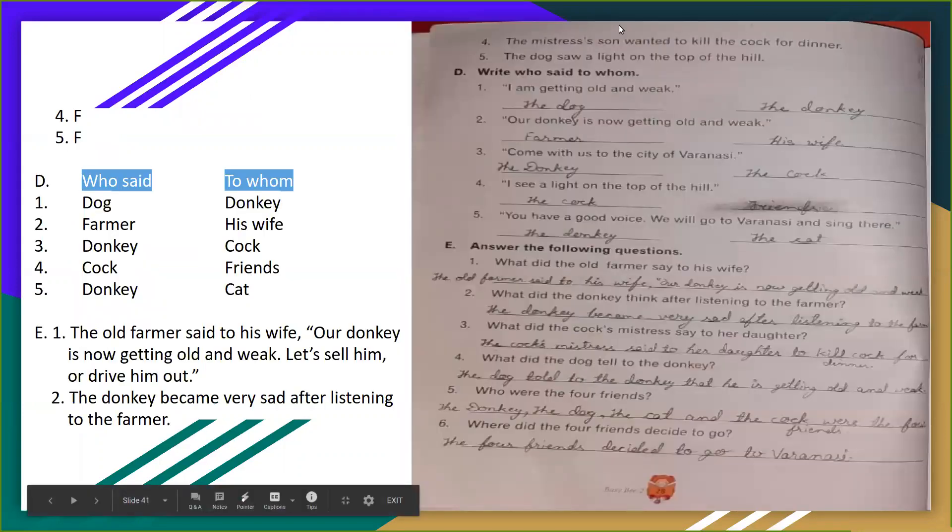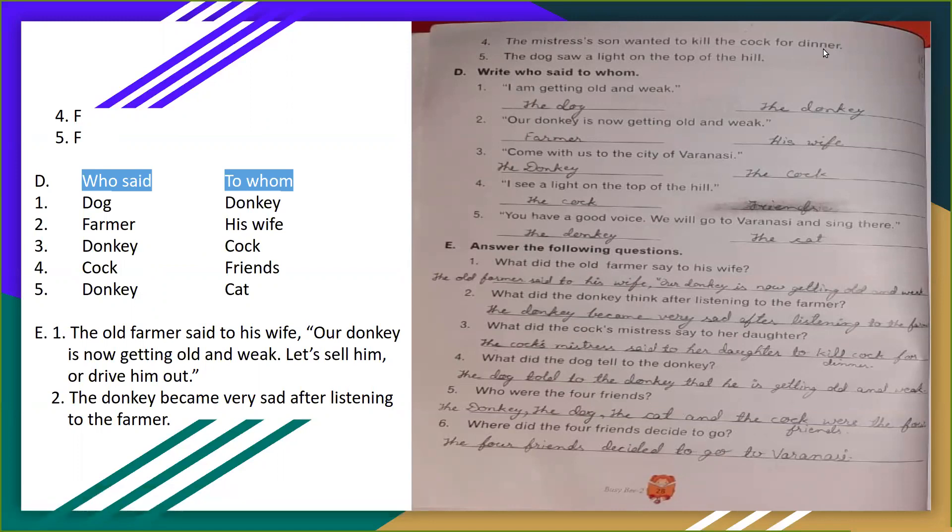Fourth, the mistress's son wanted to kill the cock for dinner. Malkin ka beeta cock ko maarna chahta tha dinner ke liye. Toh ye false hai, uski daughter maarna chahta tha. Aap log false likhenge hai. Fifth, the dog saw a light on the top of the hill. Dog pahaar ke upar par ek light dekhta hai. Dog nahi dekhta hai, cock dekhta hai. Toh ye false ho ga.